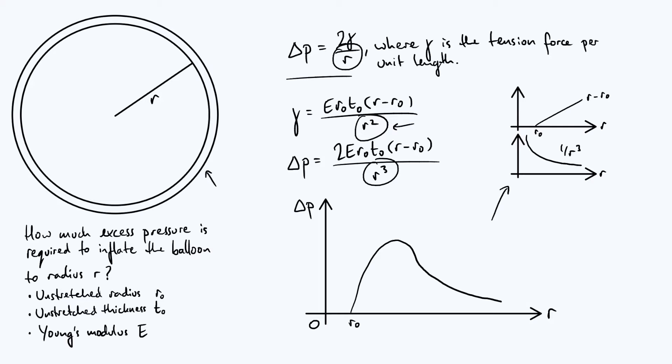So just to summarize all that, essentially it increases to start with because you're putting a strain on the balloon, and strains always require forces to produce, but then it decreases eventually when the balloon gets thin enough, the skin of the balloon gets thin enough, and its cross-sectional area is no longer capable of providing such a large force. Okay, so we've now explained the phenomenon that we set out to explain, so I think we can leave it there. Thanks for watching and see you soon.